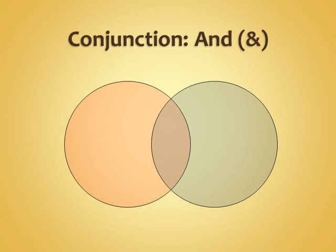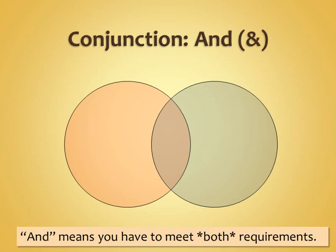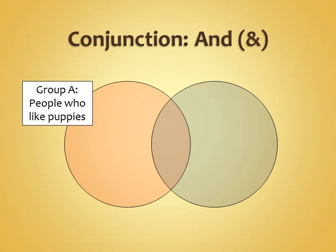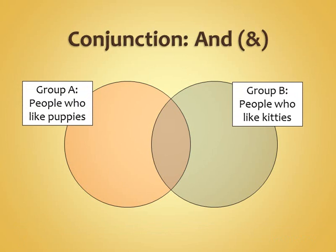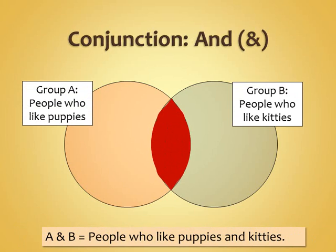First of all, we start out with AND. AND is ampersand. If you say AND, that means you have to meet both requirements. So if you think about Venn diagrams, that's what you get in the middle. If you have a group of people who like puppies and a group who like kitties, then the group in the middle would be the people who like puppies AND kitties. So that's AND.